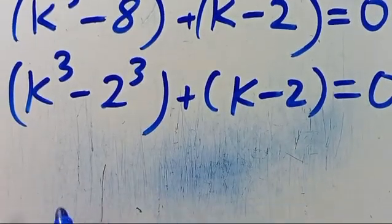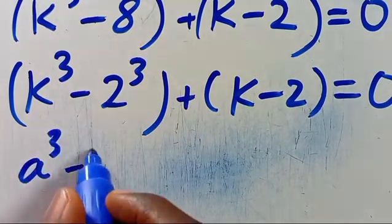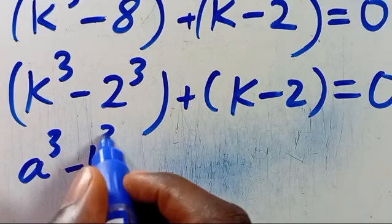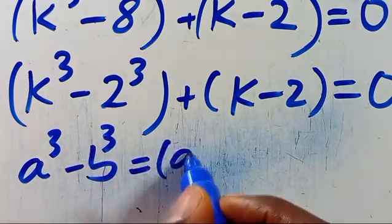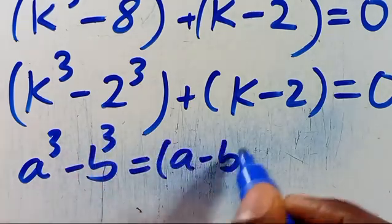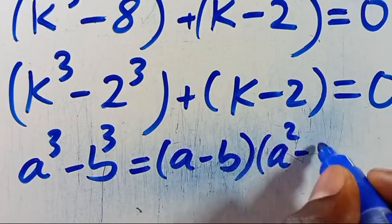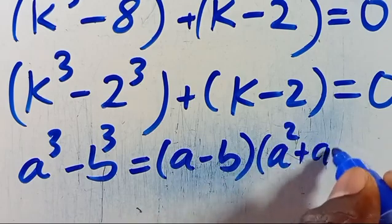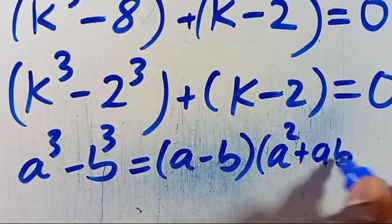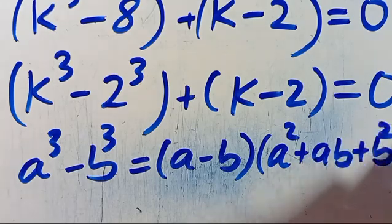Then let us recall: anytime when we have a to the power of 3 minus b to the power of 3, this equals a minus b in parenthesis, multiplied by a squared plus ab plus b squared.